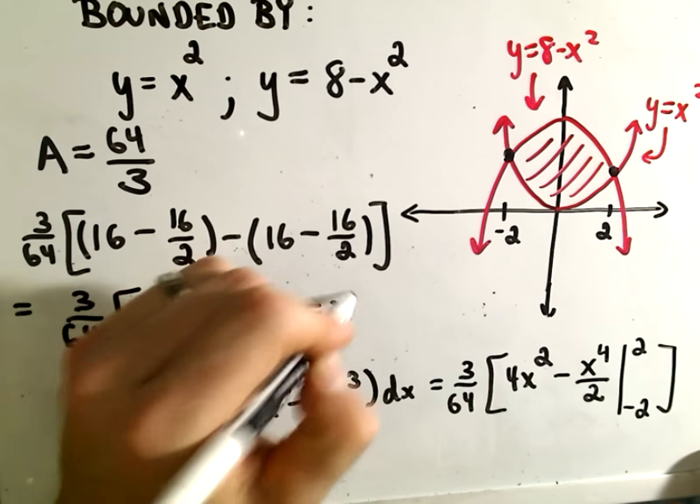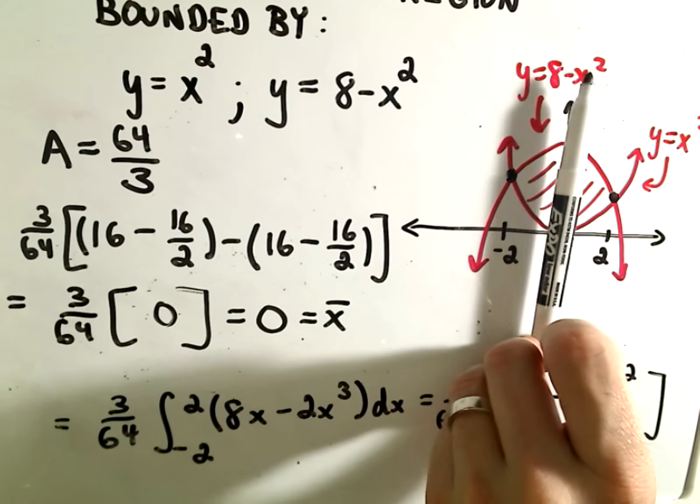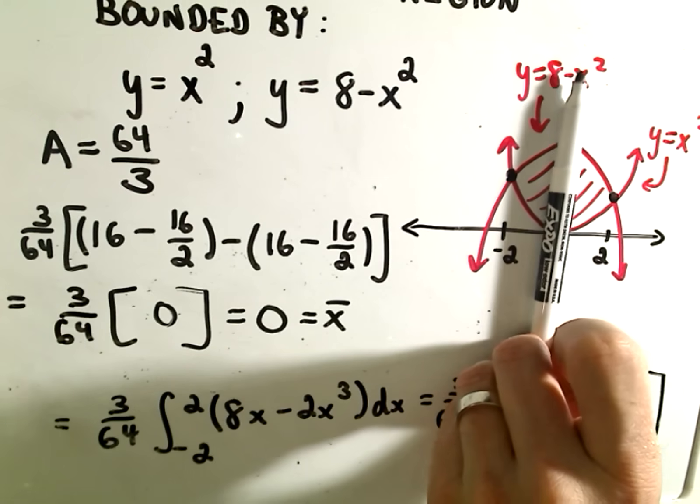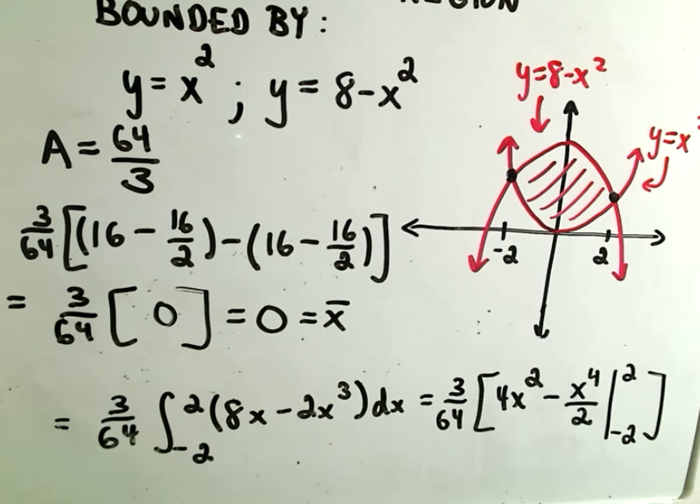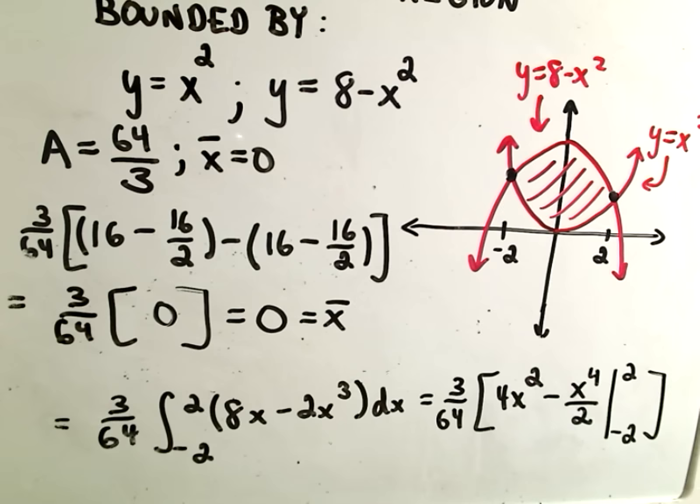Which we said intuitively in the other video. If this thing is symmetric, it's certainly symmetric about the y-axis. So our x-bar should have value 0. That does agree with what should be happening here with our intuition.